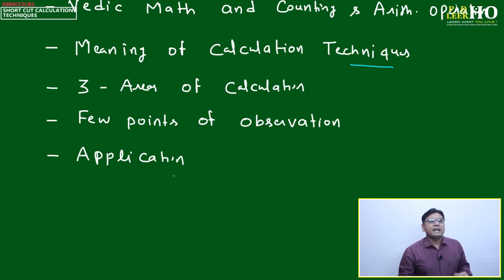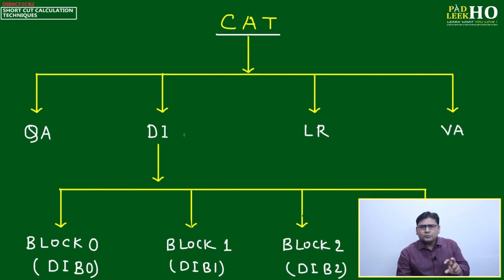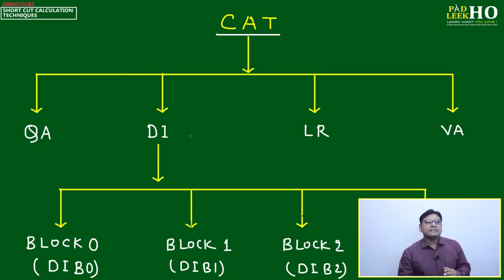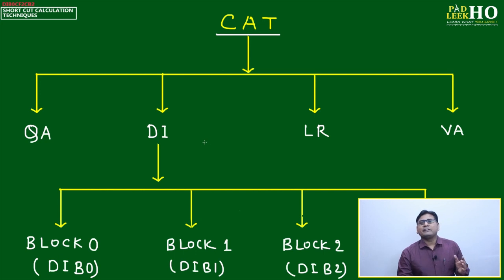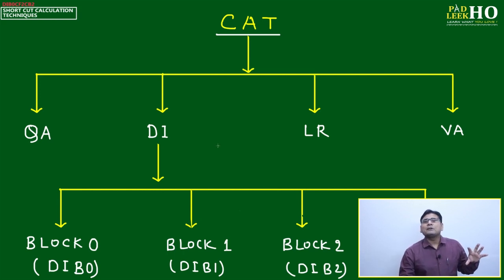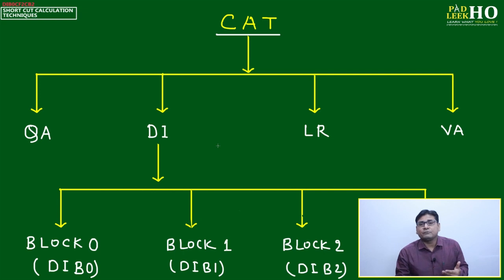We'll also discuss the three areas of calculation, the three pillars of Vedic math, and key observation points to keep in mind when applying calculation techniques. Now, let's briefly review the CAT syllabus. CAT is divided into four sections: QA, DI, LR, and VA. For preparation purposes, DI and LR are combined in the exam, but it's easier to prepare by keeping them as four separate sections.